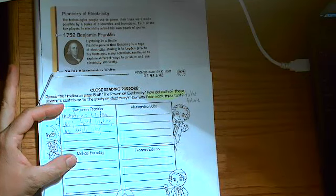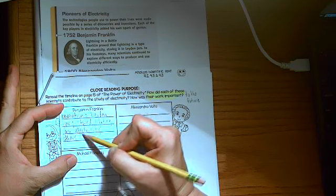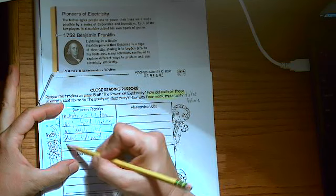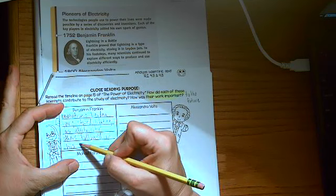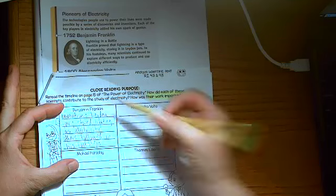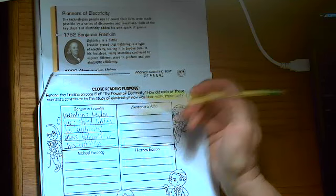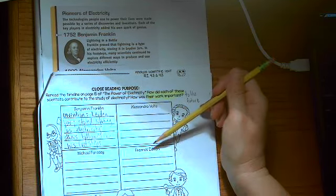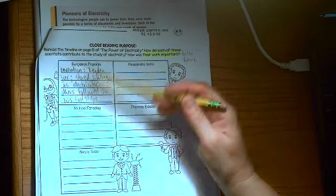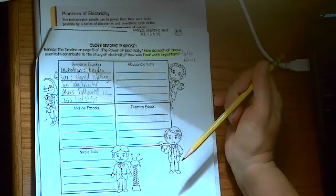How was his work important? Others followed in his footsteps. Which means that other people such as Volta, Faraday, Edison and Tesla followed what he learned about electricity when they were learning and developing their own inventions.